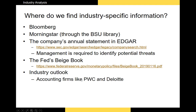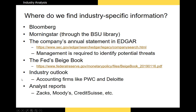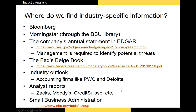Occasionally, accounting firms like PricewaterhouseCoopers and Deloitte will put out industry outlook documents — I'll post one on our Canvas site, but these get quite detailed and can provide solid information. We can also look at analyst reports — Zacks, Moody's, or Credit Suisse will sometimes provide analyst or industry outlook reports. And lastly, the SBA — Small Business Administration — will sometimes provide industry outlooks for various industries.